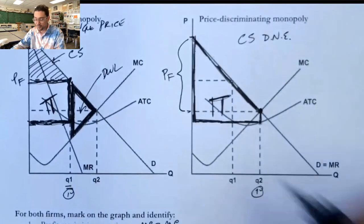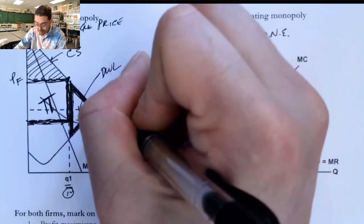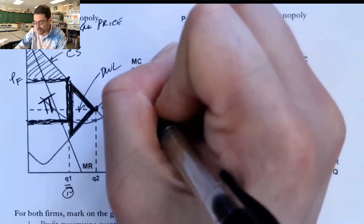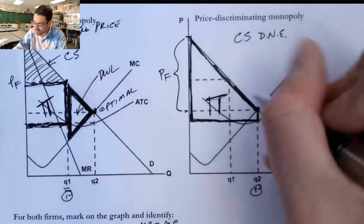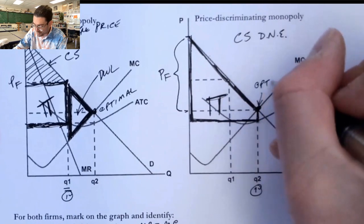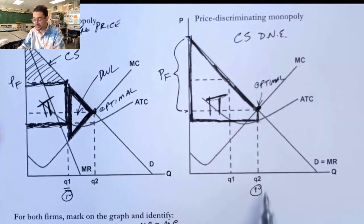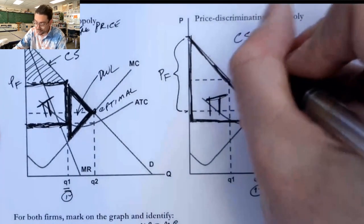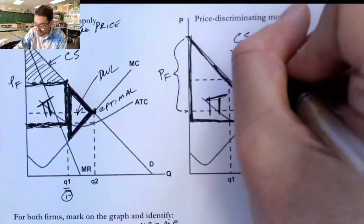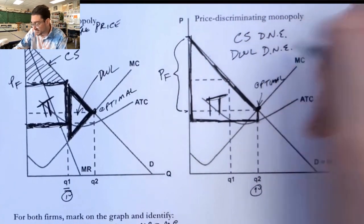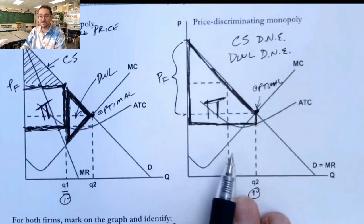But in this market, we know that this is the optimal point. That's where price equals marginal cost. That's how I can determine deadweight loss. This is still the optimal point. And so, in fact, we are producing the socially optimal quantity. And that would be why deadweight loss does not exist.